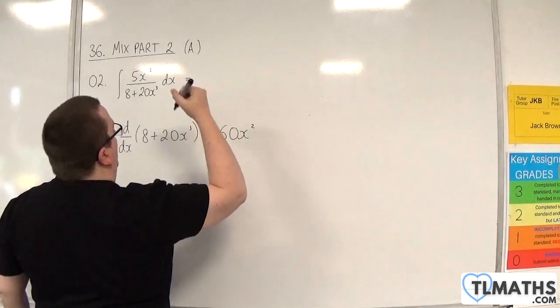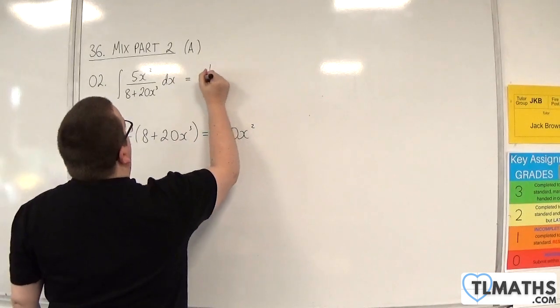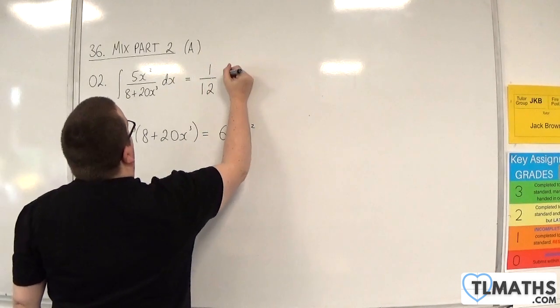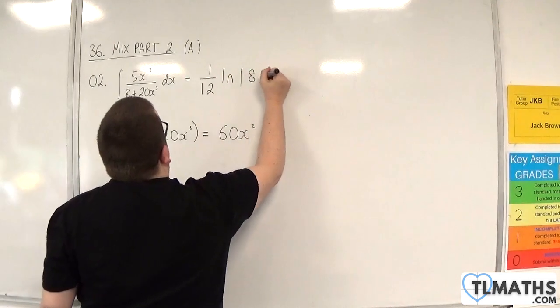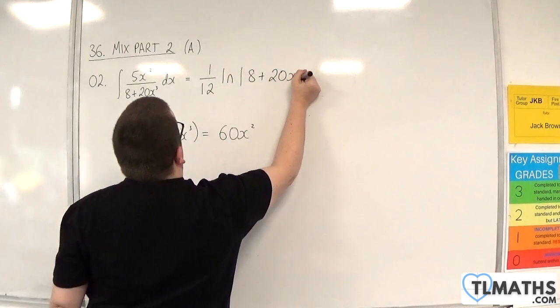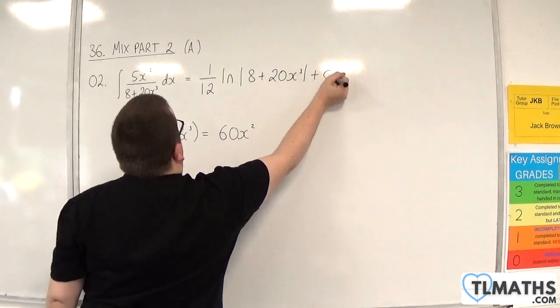So because we've got 1 twelfth of what we need, that is 1 over 12 times the natural log of the modulus of 8 plus 20x cubed, plus a constant.